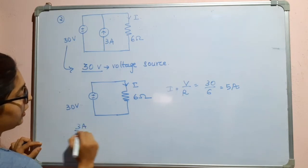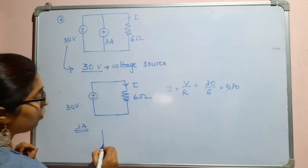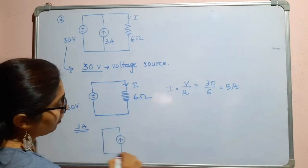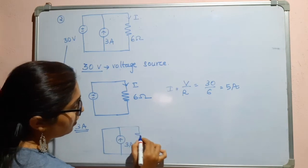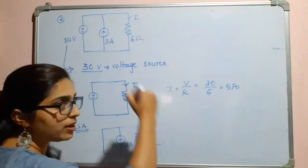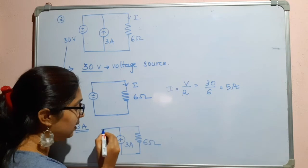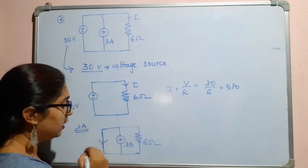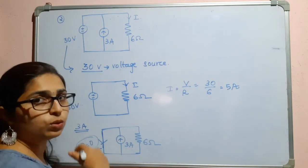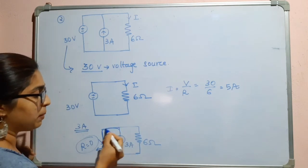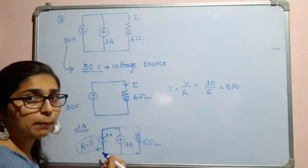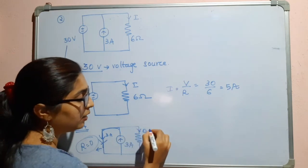Now considering the 3 amperes current source, we redraw the circuit and short circuit the voltage source. We have the 3 ampere current source and the 6 ohm resistor. Current always follows the low resistance path, so it takes the short-circuited path, which has resistance equal to 0. Therefore, all 3 amperes flow through the shorted path.